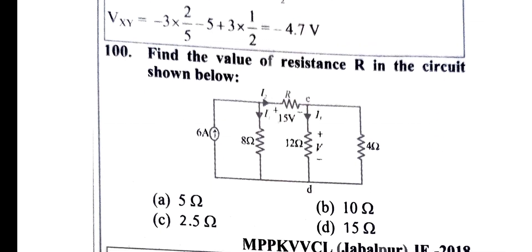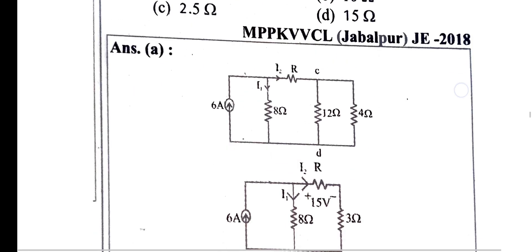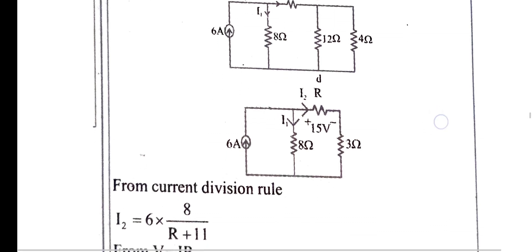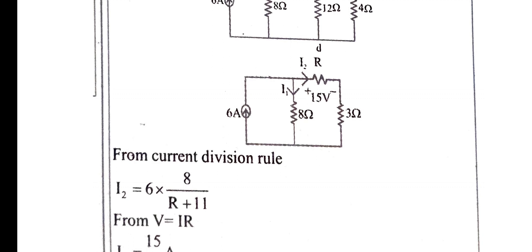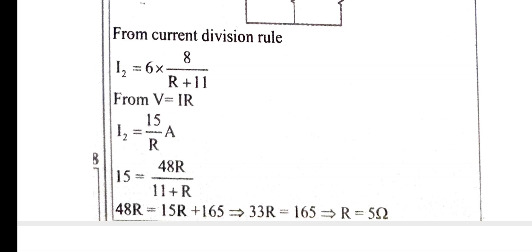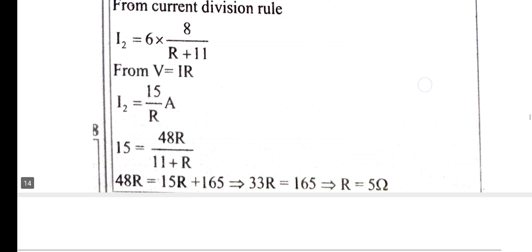Now we find the value of resistance R in the circuit. Applying the current division rule: the total current equals 6 into 8 divided by R plus 11. Using V equals IR and the current division rule along with Ohm's law equations, solving for I2 gives the value, and we find R equals 5 ohm.